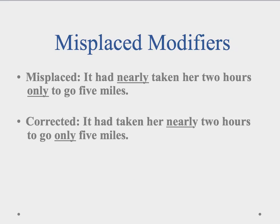Here's another example of misplaced limiting modifiers: 'It had nearly taken her two hours only to go five miles.' 'Nearly' wants to modify 'taken' right after it, but that's not accurate — 'nearly' really needs to modify how long it took, which is 'two hours.' And 'only' sounds like it's modifying the infinitive 'to go,' but really 'only' needs to modify the distance of five miles. We need to pay close attention to where we place these one-word limiting modifiers, putting them right before the words they're supposed to describe.